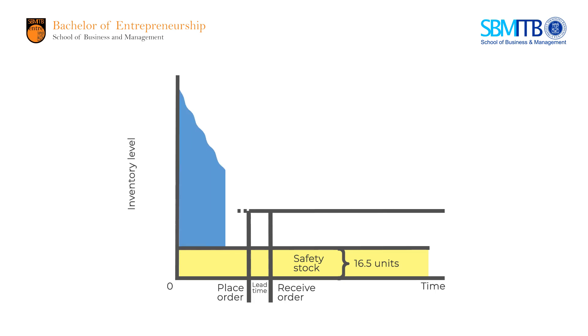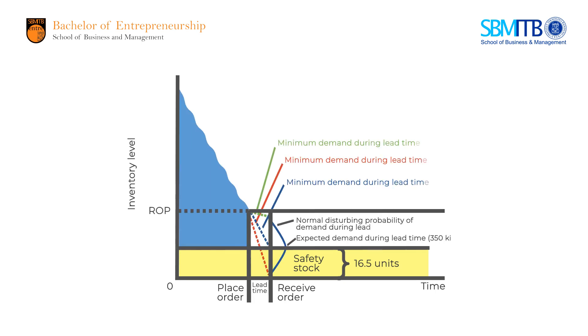Then this is the ROP point — we have to reorder when our stock hits this point to avoid stockout. Since demand fluctuates, we use safety stock as a buffer.